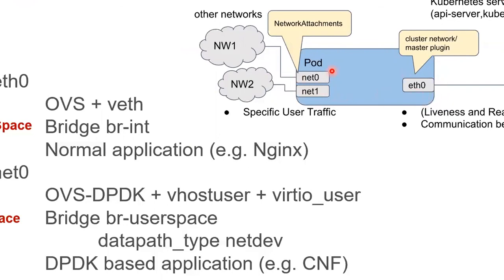The diagram shows pods with three interfaces: eth0, net0, and net1. Eth0 connects to the Kubernetes cluster network to access Kubernetes services such as the API server. Net0 and net1 are additional network attachments connecting to other networks using other CNI plugins. For Network Edge, OVS-CNI should be used for eth0 so normal applications like engines can use it, while the user space CNF plugin should be used for additional network attachments such as net0, which can be used by CNF.